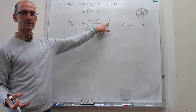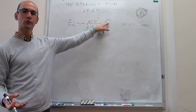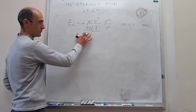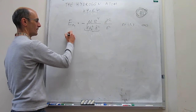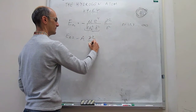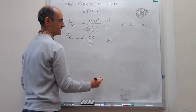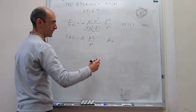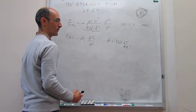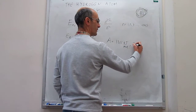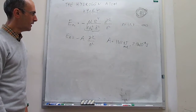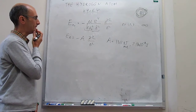The only thing that changes is Z: Z equals 1 for the hydrogen atom, 2 for the helium-plus atom, 3 for the lithium 2-plus atom, and so forth. Since all the other terms are constants, we can rewrite this expression simply as: E_n = minus A times Z squared over N squared, where A is a constant equal to 1312 kJ per mole, or on a per-atom basis, 2.18 × 10⁻¹⁸ joules.